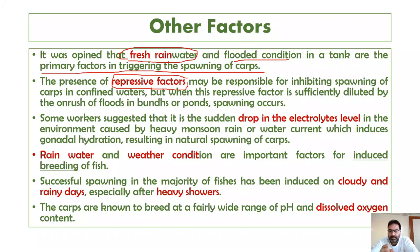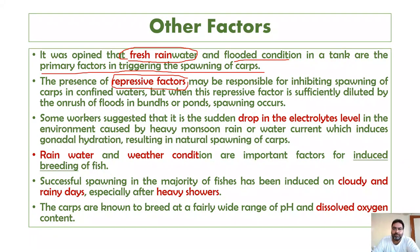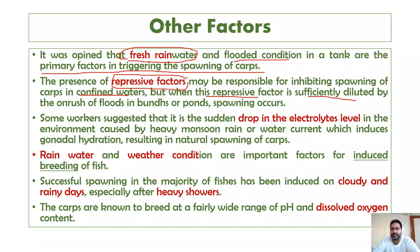Repressive factors include polluting agents such as pesticides and certain electrolytes. The presence of repressive factors may be responsible for inhibiting the spawning of carps in confined waters. However, when these repressive factors are sufficiently diluted — due to excess water from rains, artificial water addition, or floods — they become diluted and spawning occurs.